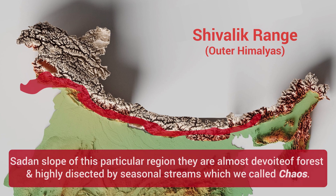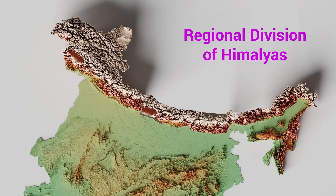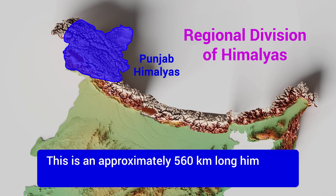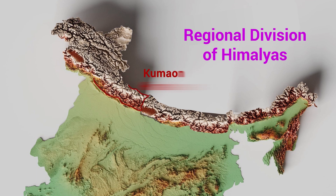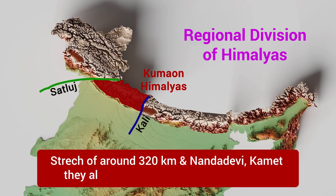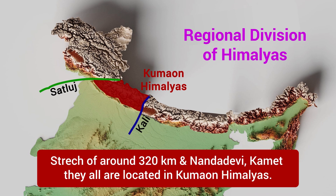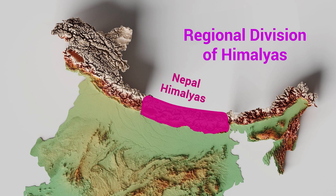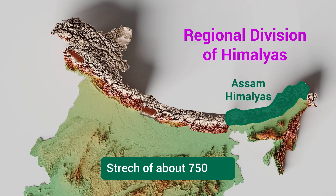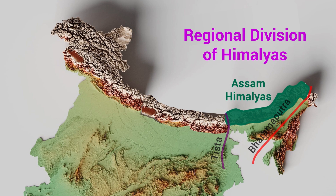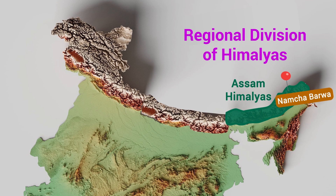Himalayas can also be viewed in a regional aspect, from west to east. First, Punjab Himalayas — an approximately 560 km stretch between the Indus and Sutlej rivers. Then Kumaon Himalayas — between the Sutlej and Kali rivers, a stretch of about 320 km, where Nanda Devi and Kamet are located. Then Nepal Himalayas — a stretch of about 800 km between the Kali and Teesta rivers. Finally, Assam Himalayas — spread over 750 km between the Teesta and Brahmaputra rivers. Namcha Barwa, the easternmost extent, is also located in the Assam Himalayas.